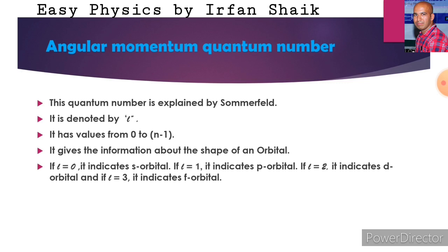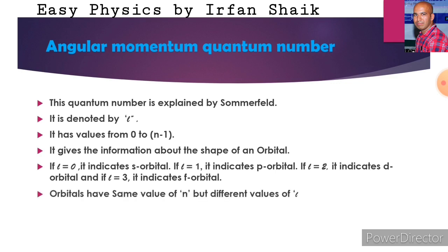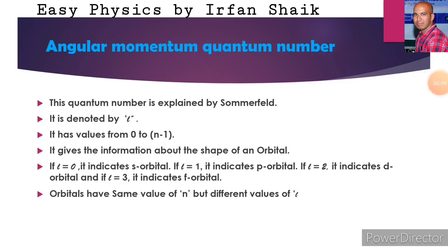If l is equal to 0, it indicates s orbital. If l is equal to 1, it indicates p orbital. If l is equal to 2, it indicates d orbital. And if l is equal to 3, it indicates f orbital. Orbitals can have the same value of n but different values of l. For example, if n is equal to 3, we get three values for l: 0, 1, and 2. That means there are different values for l in the third shell, so the value of n is the same for some suborbitals while the l value changes.